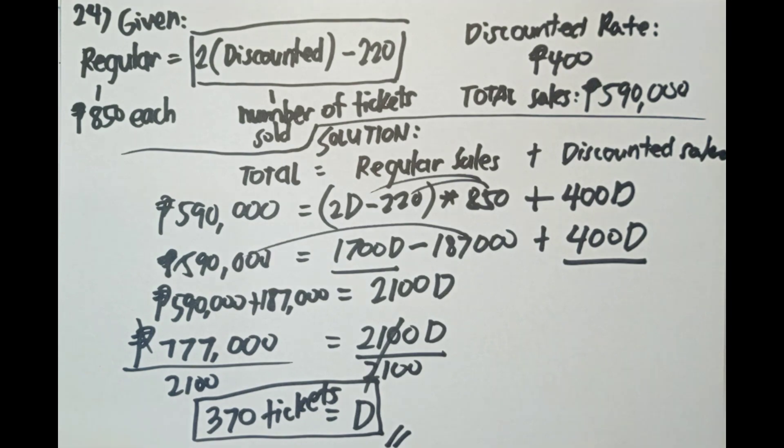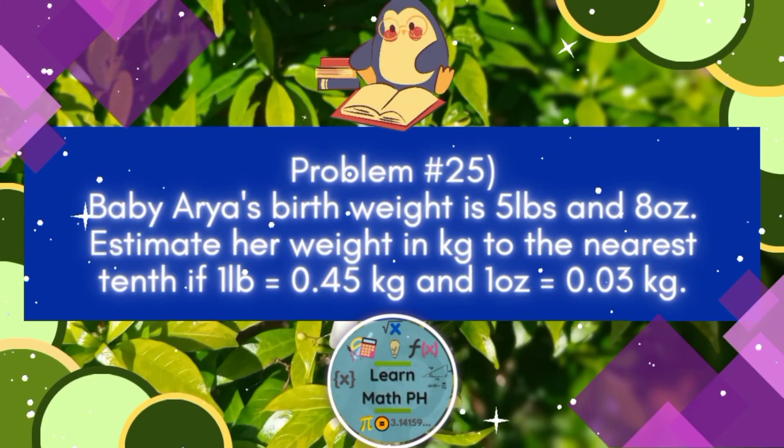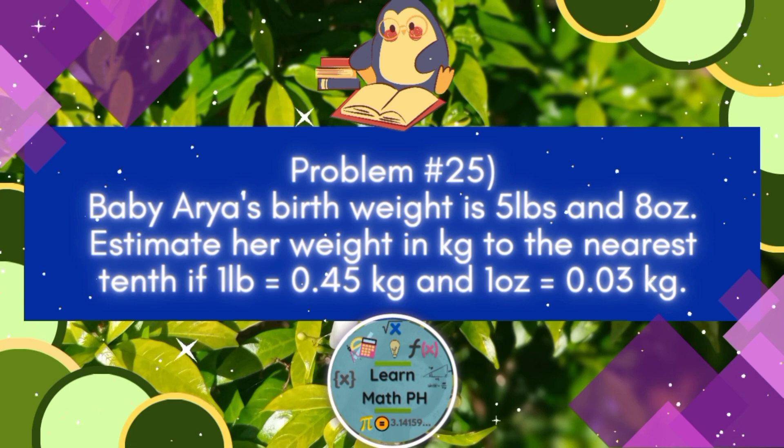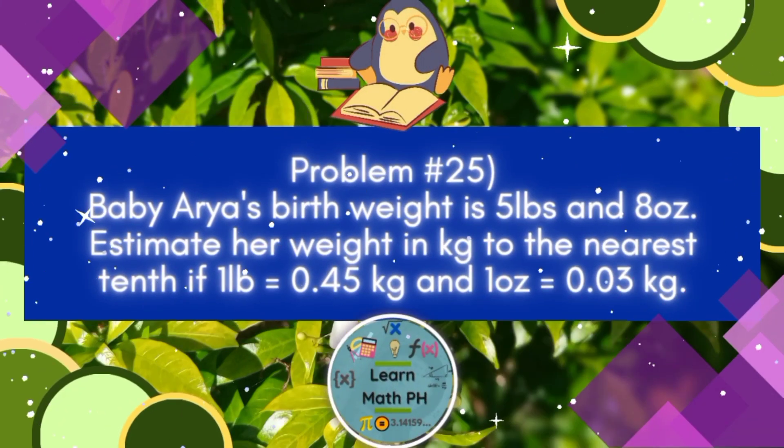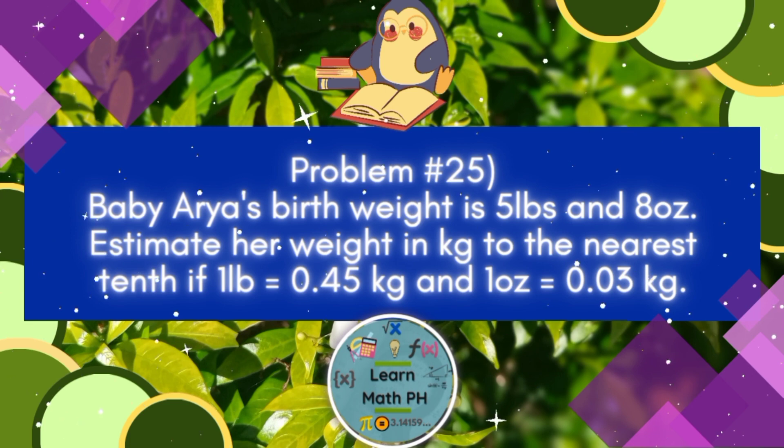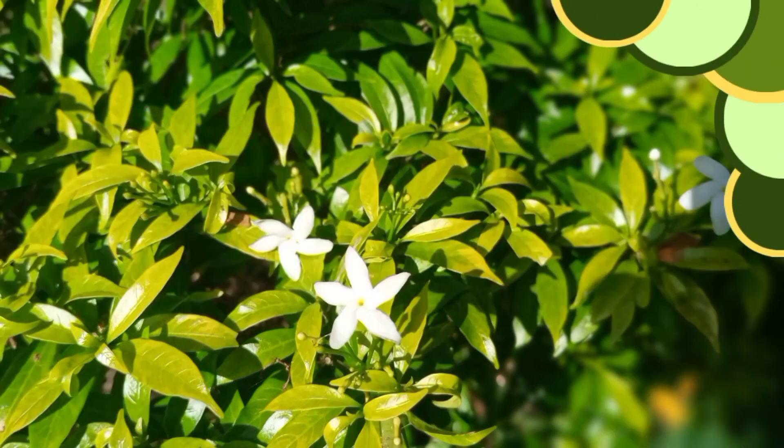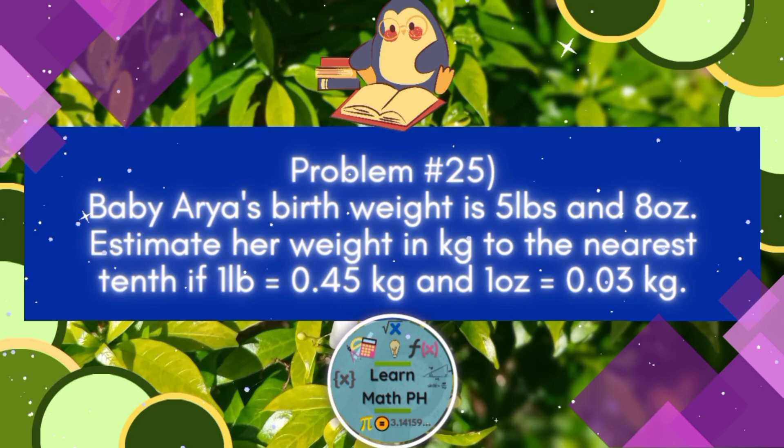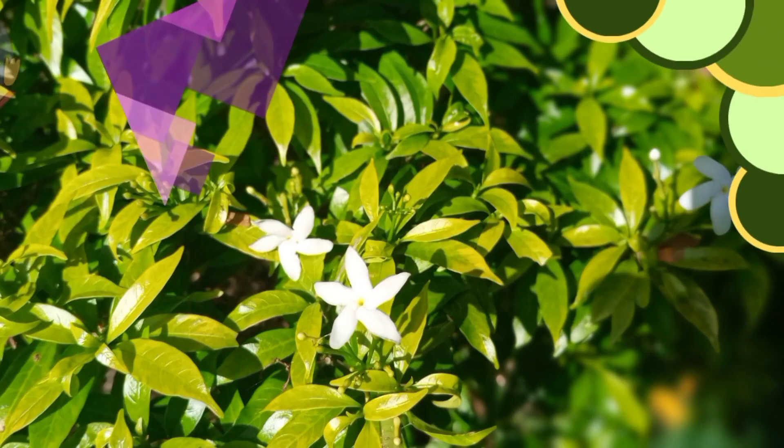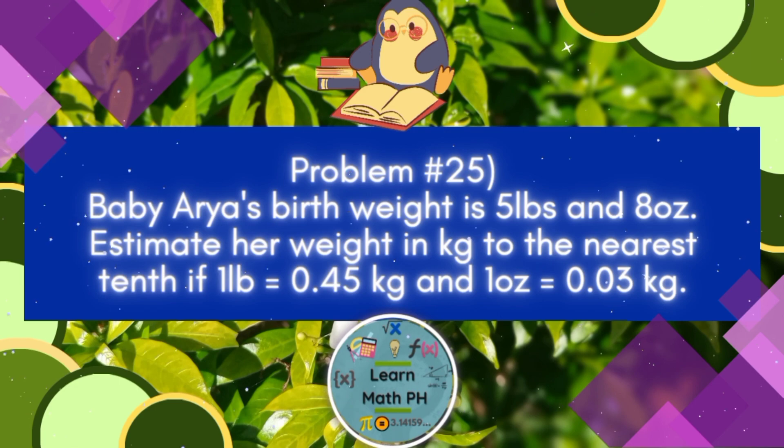Next problem please. Last but not the least, ang tanong natin sa number 25. Baby Arya's birth weight is 5 pounds and 8 ounce. Estimate her weight in kilograms to the nearest tenth if 1 pound is equivalent to 0.45 kilograms and 1 ounce is equivalent to 0.03 kilograms.